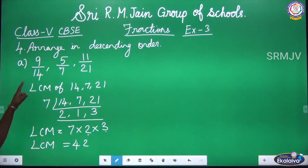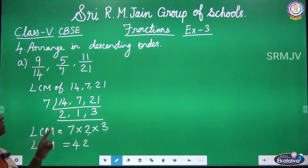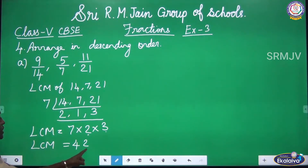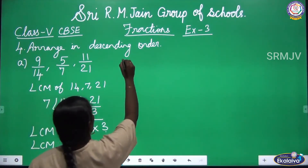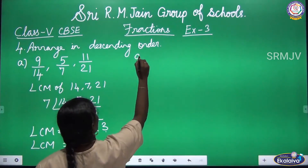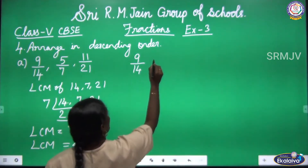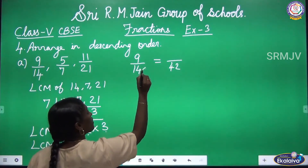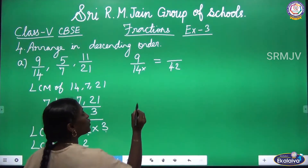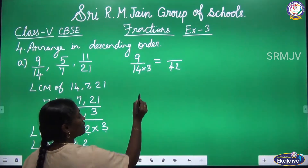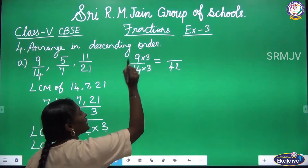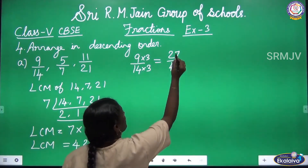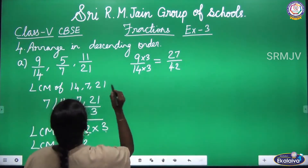Now we have to convert the denominators of the given fractions to 42. Let us take the first fraction, 9 by 14. We have to change the denominator to 42. In the 14 table, 14 threes give 42, so we multiply the numerator by 3. 9 threes are 27, so 27 by 42 is the first fraction.